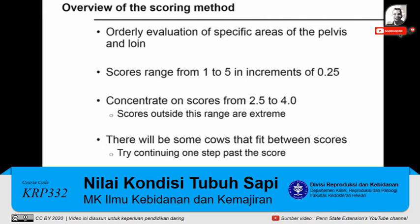Scores outside of this range are extreme and indicate serious problems. For example, the difference between a 4.75 and a 5.0 is insignificant. Both cows are seriously over-conditioned and prone to the same metabolic problems, and we would not base management decisions on the differences between these scores. The same is probably true of two cows scoring 1.5 and 1.75 — both are seriously under-conditioned.